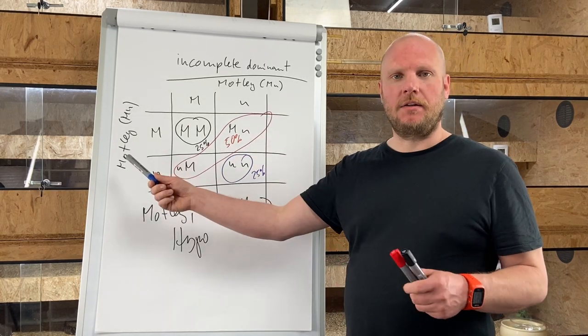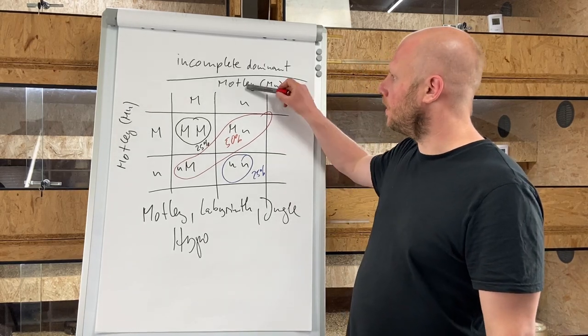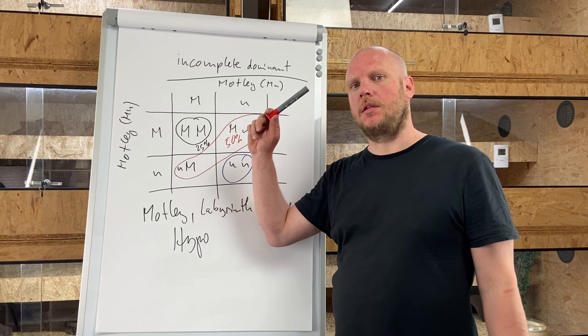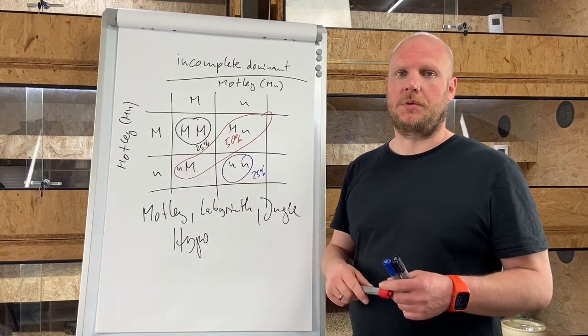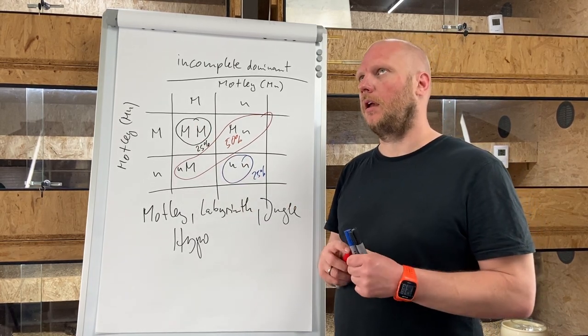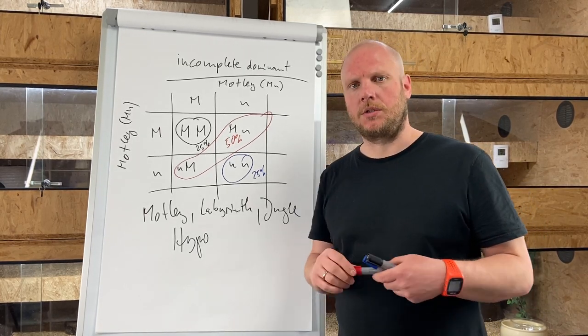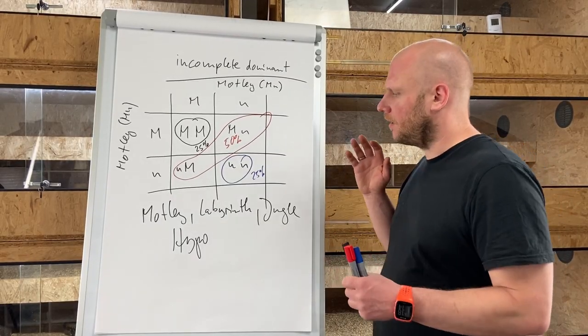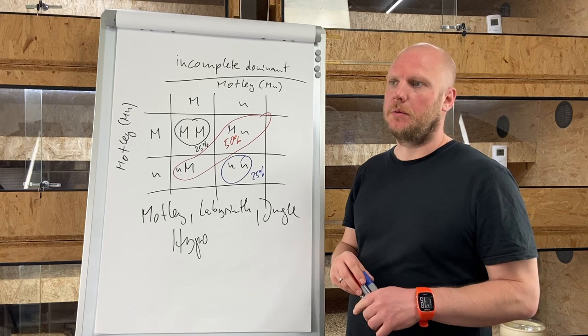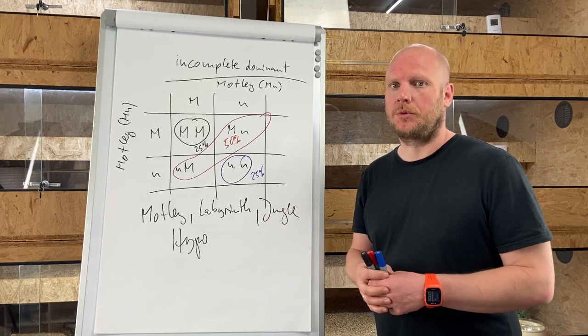My example here is kind of a bad one, but I wanted to talk about this because this is a breeding I recommend to never do because of the 25% super motley. We have been producing a litter, I think back in 2012, from a motley to motley breeding because there have been rumors that the super motley are not viable and we wanted to make our own experiences.